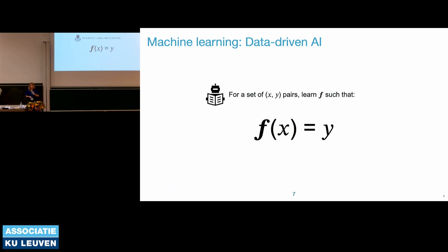The base idea of data-driven AI is that we are trying to learn a function. We give many pairs of inputs and outputs and rely on an automatic way to learn the function that transforms input into output. More often than not, we are learning an approximation of the real function. If our approximation is good, our machine learning model works well.